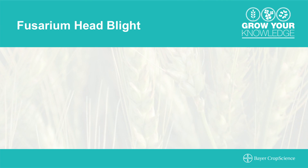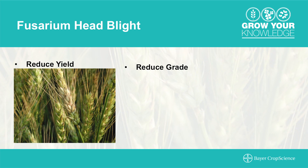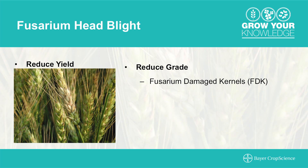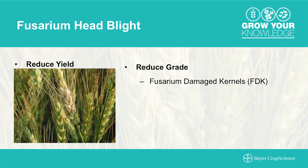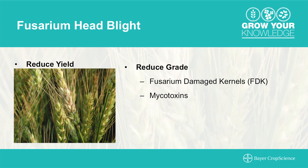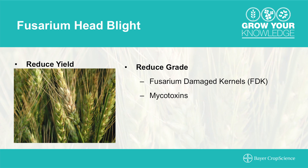Fusarium head blight can impact the crop in a number of different ways. It can reduce yield and grade by producing Fusarium Damaged Kernels, or FDK. These kernels are shrunken, shriveled, and often have a chalky white appearance to them. In addition, Fusarium head blight can produce mycotoxins, primarily deoxynivalenol, or DON.